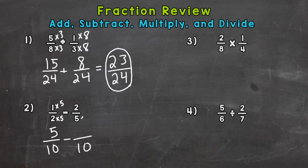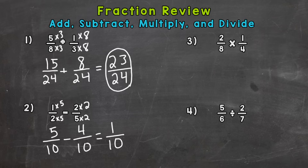Now for 2 fifths: 5 times 2 gives me that denominator of 10, and 2 times 2 gives me 4. Now I'm ready to subtract: 5 minus 4 is 1, and we keep our denominator of 10 the same. So 1 tenth is our answer. You always look to simplify, but the only common factor between 1 and 10 is 1, so we are in simplest form.